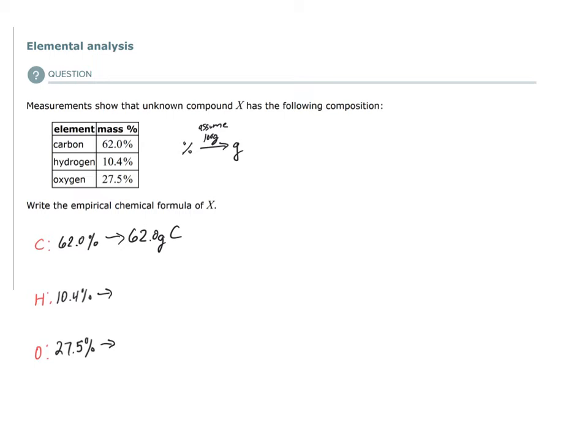If 10.4% of the mass of the sample is from the hydrogen and I have 100 grams of sample, then 10.4 grams of hydrogen is what I'll have. And for oxygen, the same, 27.5 grams of oxygen.